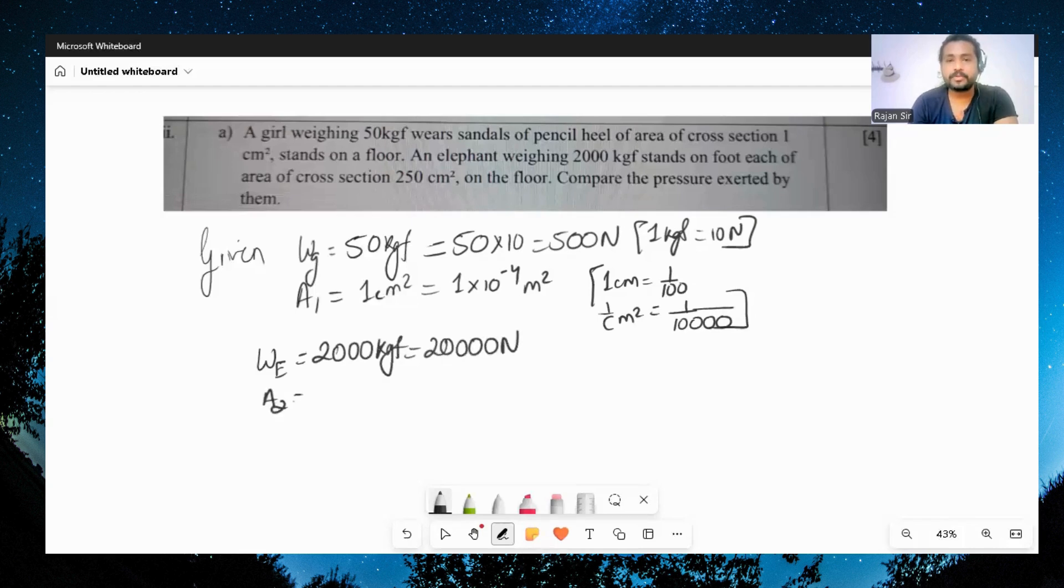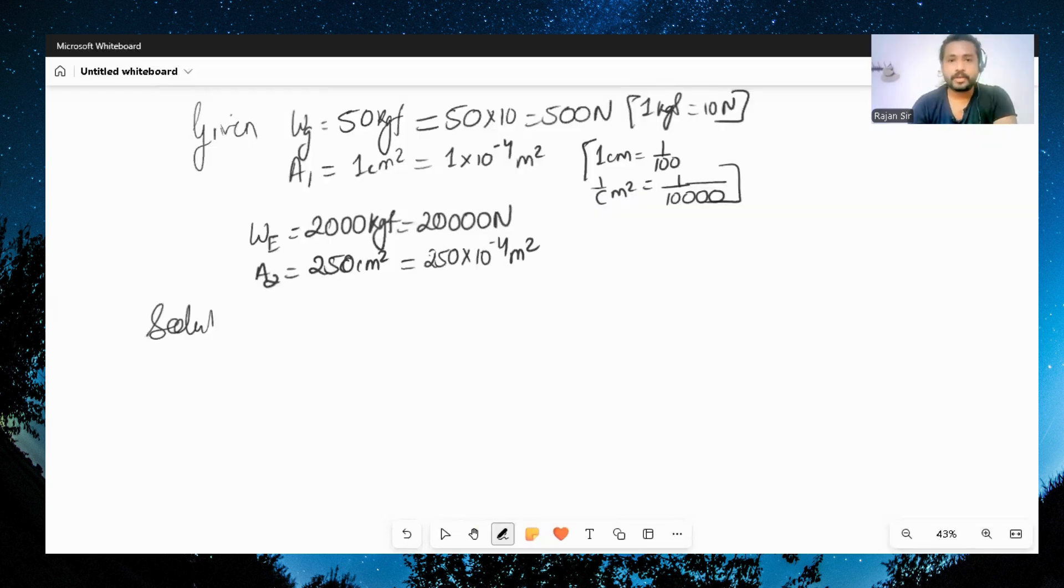And area A2 is equal to 250 centimeter square. Now it is given 'stands on foot' is singular, for one foot. So basically the elephant is standing on one foot, probably in a circus or something. So we got 250 times 10 raised to minus 4 meter square.